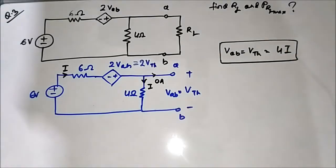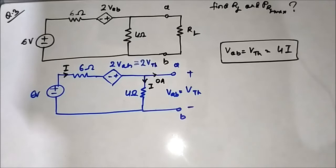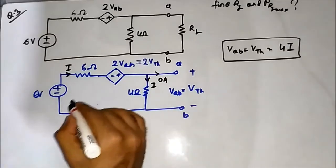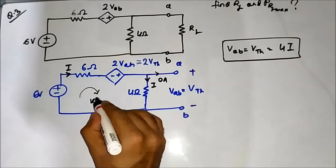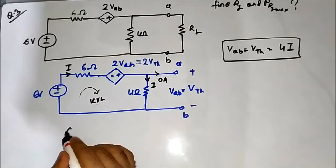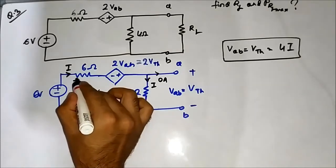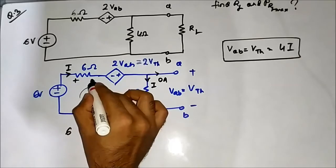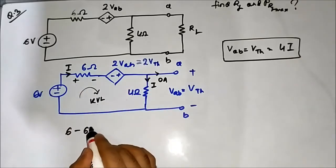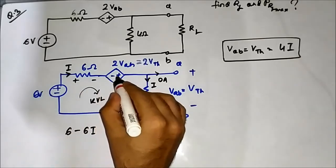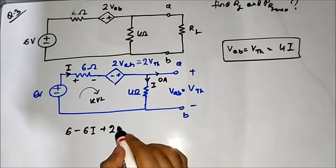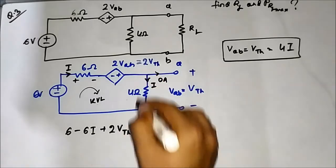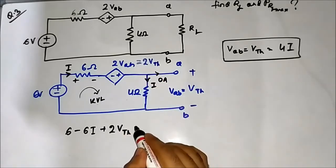Now when we apply KVL in this closed loop, we get: 6 minus 6I plus 2VTH minus 4I equals zero. Instead of VTH we substitute 4I, so 2VTH becomes 2 times 4I, which equals 8I.